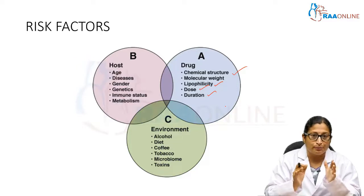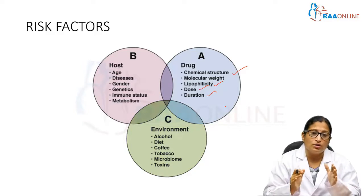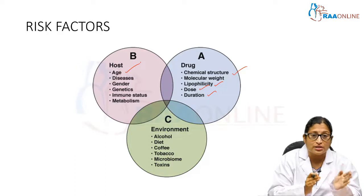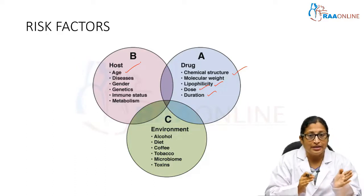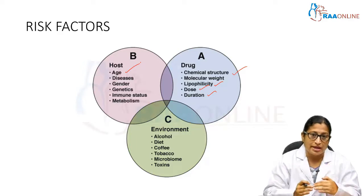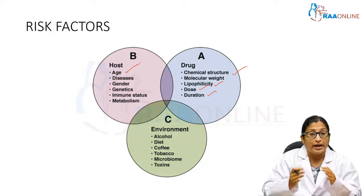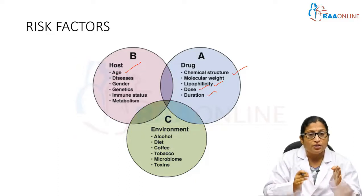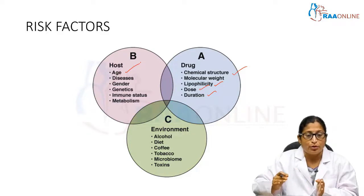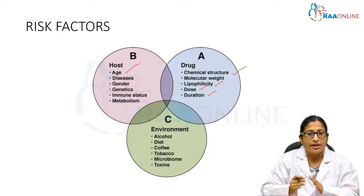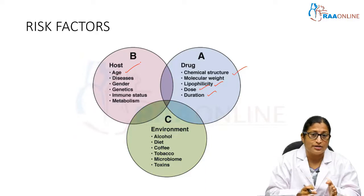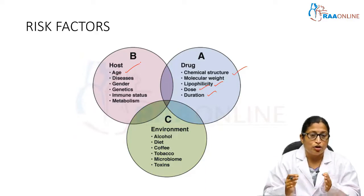What are the host factors that make patients susceptible to liver toxicity from certain drugs? First, the age of the patient — adults are more susceptible to DILI than children. Certain underlying comorbid conditions also increase risk, such as diabetes mellitus, obesity, an immunocompromised state, or underlying diseases like rheumatoid arthritis, SLE, or chronic hepatitis B or C. These individuals are more prone to develop drug-induced liver injury when a known hepatotoxic drug is given. Gender is also a factor — female gender is more susceptible than male. Genetic polymorphisms in metabolizing enzymes like cytochrome P450 also play a role.